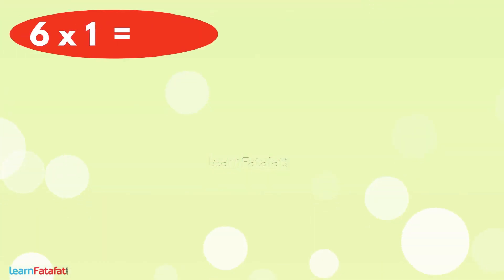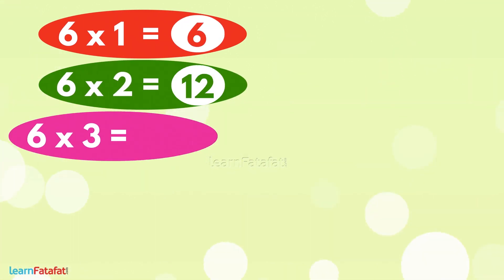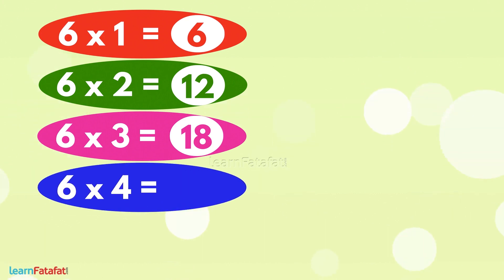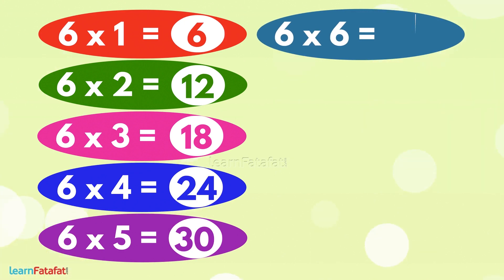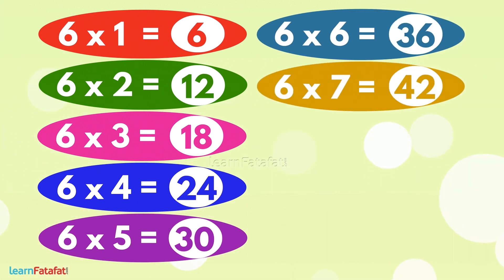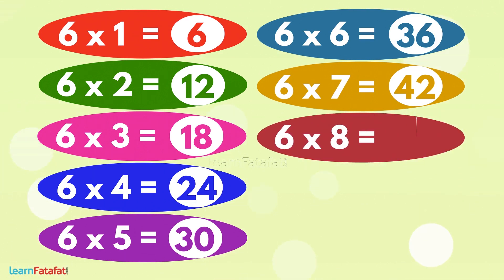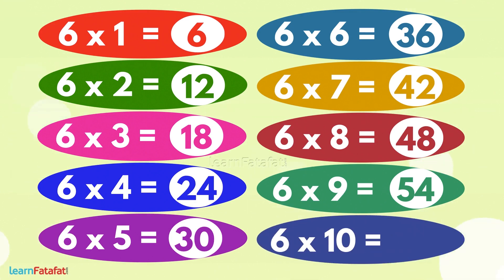6 1s are 6. 6 2s are 12. 6 3s are 18. 6 4s are 24. 6 5s are 30. 6 6s are 36. 6 7s are 42. 6 8s are 48. 6 9s are 54. 6 10s are 60.